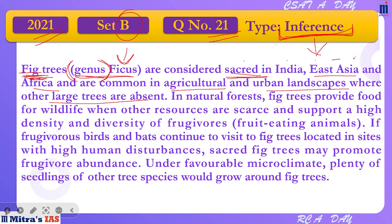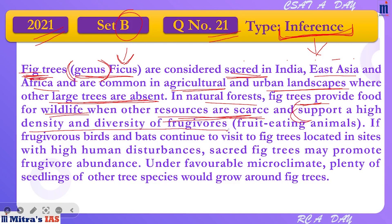Fig trees are common in agriculture and urban landscapes where other large trees are absent. So fig tree sacred mana jata hai in sab areas mein, paaya jata hai, and it is present in agriculture and urban landscapes jahan pe other large trees absent hain. In a natural forest, fig tree provides food for wildlife when other resources are scarce — jab other resources kam hoti hain, fig tree food provide karti hai wildlife ko.